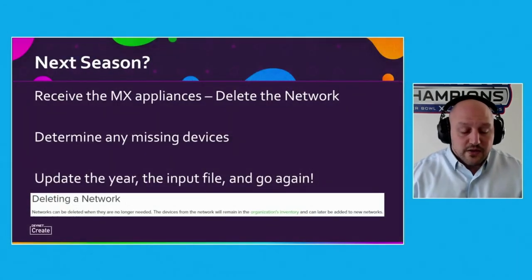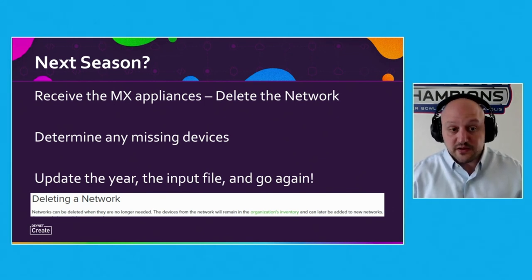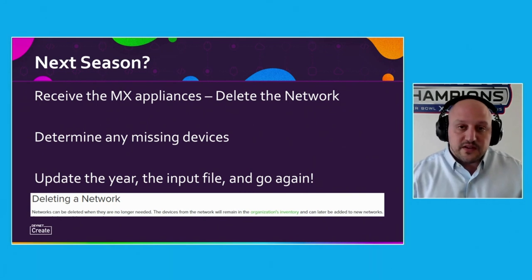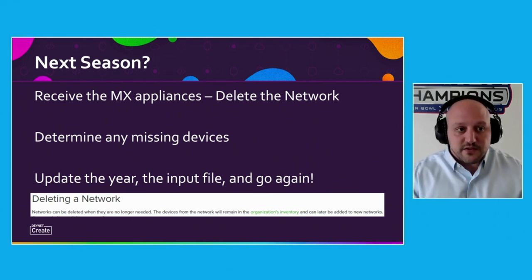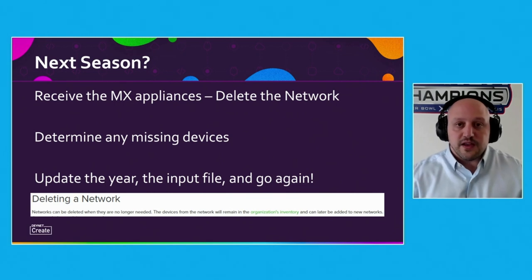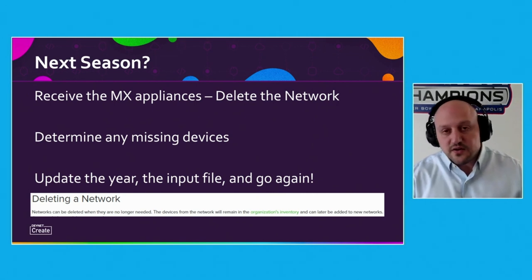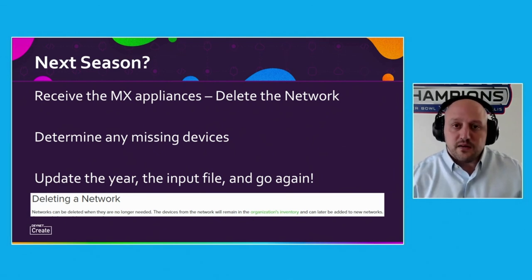For next season, how they're going to reverse this deployment: when they receive the MX appliances back at the end of the season, they go into the console and delete the network with the serial number of the appliance they received back. Doing this allows them to figure out which sites didn't send the appliances back. It also keeps the devices in the inventory for the future — deleting a network will delete the network but the device stays in inventory. The first thing in the workflow is making sure devices are available in inventory, and the number of devices is what we use to create networks. So if they get back 1,900 of the 2,000 appliances and can't get the other 100 due to shipping issues, they'll order another 100, start next year with 2,000 devices in inventory, make a couple of changes to the input file, and they're good to go again.